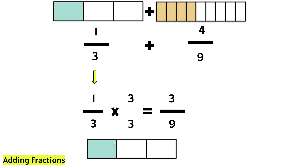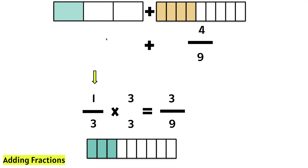1 times 3 is 3. Let's take a look at a visual. We have 1 third, and we're multiplying the numerator and denominator by 3, and that gives us 3 out of 9, or 3 ninths. We know that 1 third is equivalent to 3 ninths, and now we have common denominators. So, we can say that 1 third is the same thing as 3 ninths. Now, both fractions have a denominator of 9. They have common denominators.